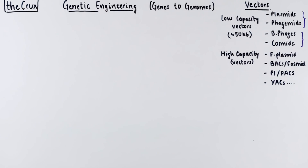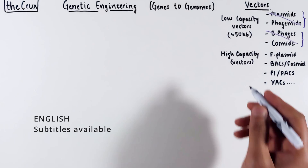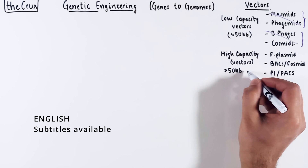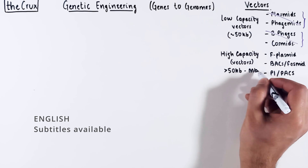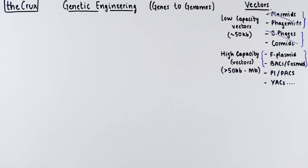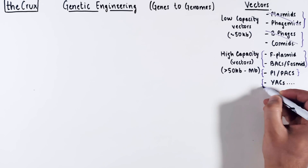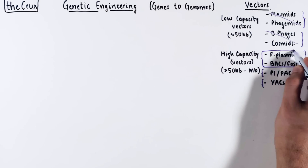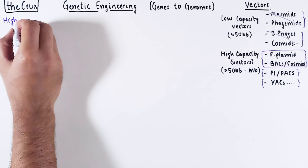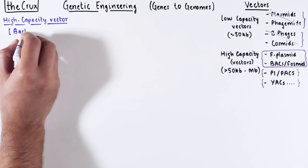We discussed low capacity vectors in the previous videos. Now we're moving into the larger capacity range, which will likely be split into three videos. We will discuss these three vectors in this video. This is a bacterial host centric view of high capacity vectors.